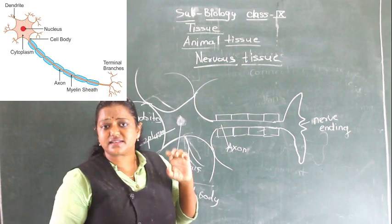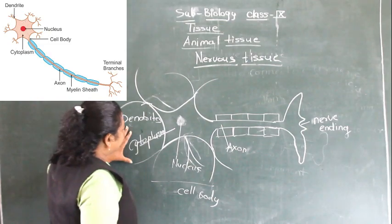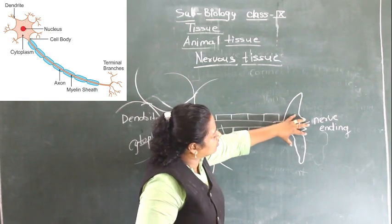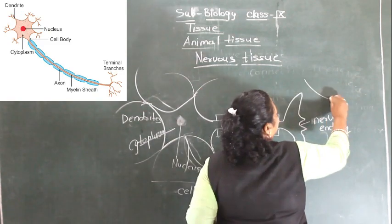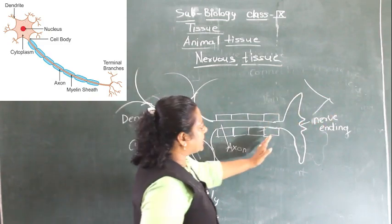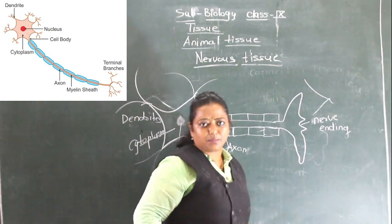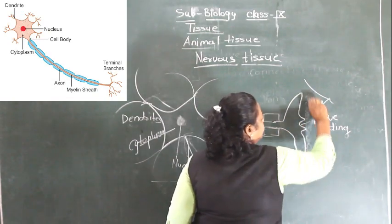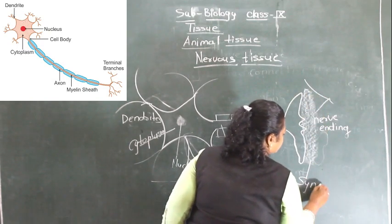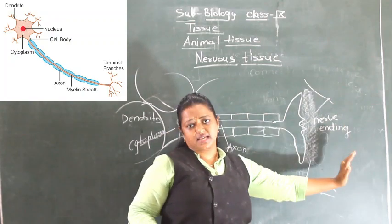Whenever any signal is received, it is received by the dendritic tips or dendrites. After dendrites, the signal or message is passed to the axon, and after the axon, that message goes to the nerve ending. Near the nerve ending, another dendritic tip of another neuron is present, so the message is passed to another nerve cell. The gap between two nerve cells is called a synapse. The two nerve cells are never attached to each other — that gap is called a synapse.